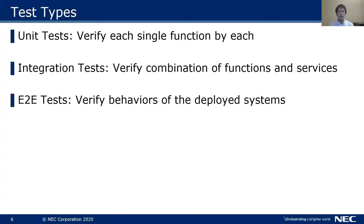For example, in the Kubernetes CI system, we deploy a Kubernetes cluster with kind — Kubernetes in Docker — and E2E tests run against this deployed Kubernetes cluster through Kubernetes API calls. On the OpenStack CI system, we deploy a small OpenStack cloud with DevStack, which is a deployment tool for development and testing. Then E2E tests, which are called Tempest tests, run against this deployed OpenStack cloud.